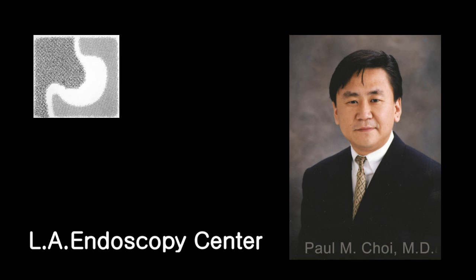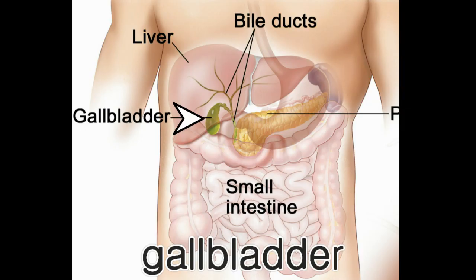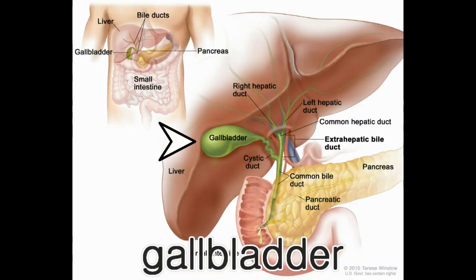In this presentation, I'll be discussing gallstone disease. The gallbladder is a hollow pear-shaped organ that is located underneath the liver in the right upper abdomen. Bile that is produced in the liver is stored in the gallbladder. Upon ingestion of fatty food, this bile is released into the intestinal tract to facilitate the absorption of fat.